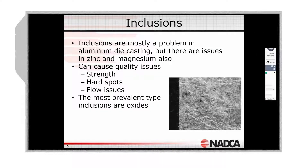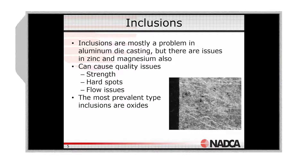Inclusions are mainly a problem in aluminum, but they also occur in zinc and magnesium. In magnesium, you're going to be worried about magnesium oxide and foreign materials because you're dealing with high temperatures. If you're using refractory pots for zinc or magnesium, any refractory material can get into the melt, introducing inclusions.